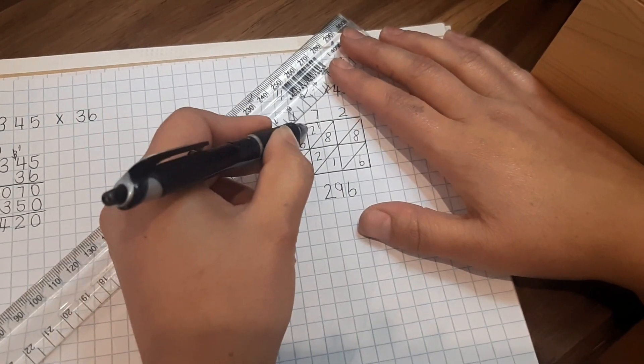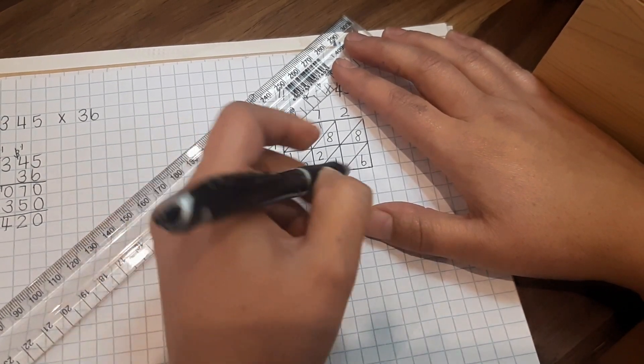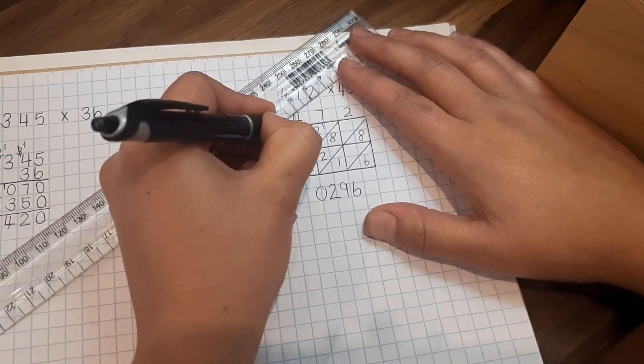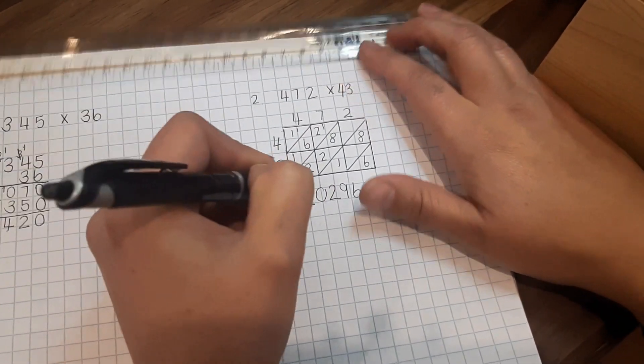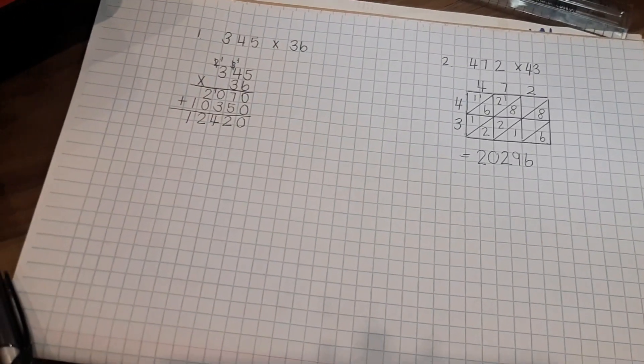6 plus 2 is 8 plus 1 is 9 plus another 1 is 10. Write the 1. 1 plus 1 is 2. There you go guys, there's your multiplication questions.